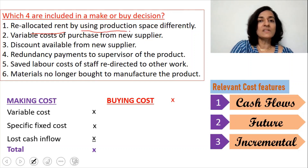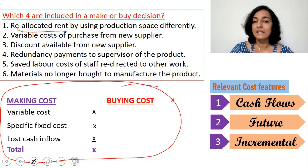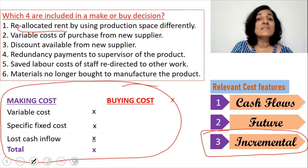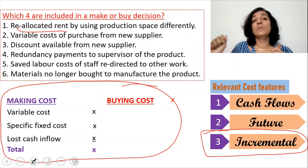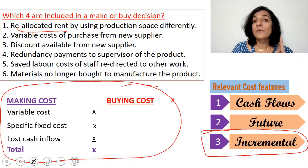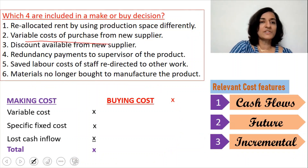First item: reallocated rent by using the production space differently. Reallocated rent does not figure in the making cost and buying cost list. Going to the relevant costing features — is it incremental? No. Whatever rent was paid earlier is still being paid now; it is not an additional expense. It remains the same whether we make or buy. Since it does not satisfy the incremental feature of relevant cost, it should not be included in a make or buy decision.